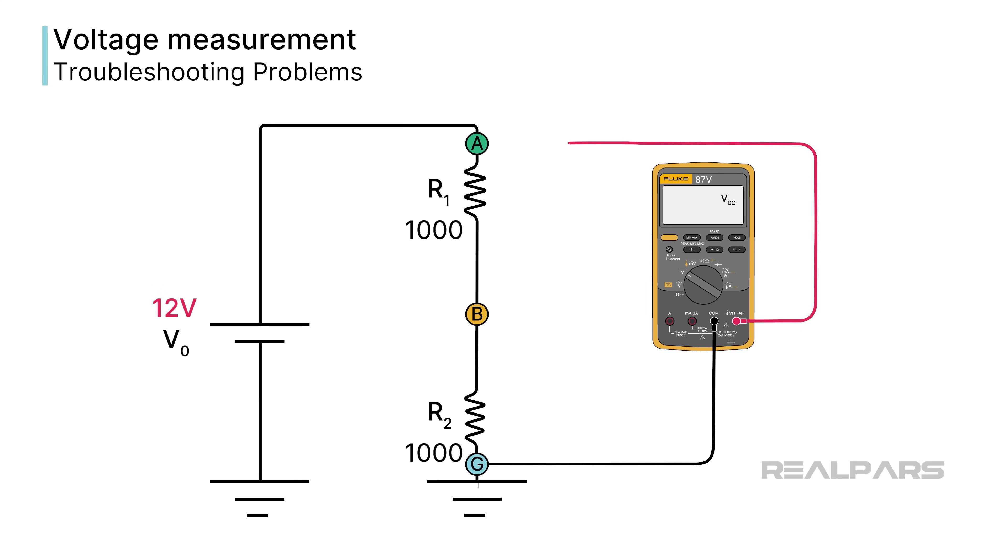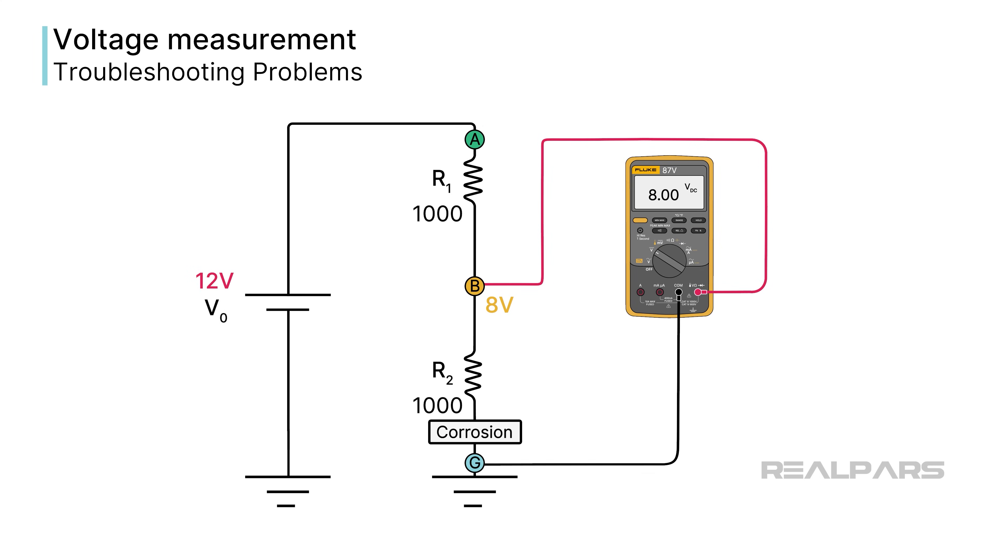Here's another troubleshooting problem. The voltage at point A is 12 volts and 8 volts at point B. How is that possible? The voltage at point B is much higher than it should be. This is a classic example of the effect of increased resistance due to corrosion. If the loads were lamps, they would be dimmer than normal due to decreased circuit current and the voltage drop across the corrosion.